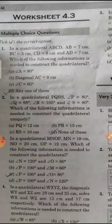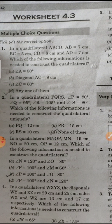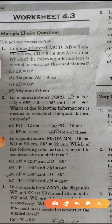Worksheet 4.3 is completely a construction worksheet and you have to construct different quadrilaterals. These are MCQ type questions, and all questions have 4 options — 3 are wrong and one is right.